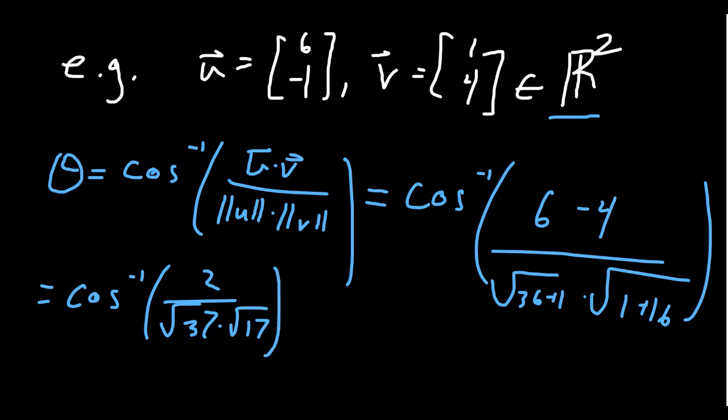And so simplifying this a little bit, you get arc cosine of 2 over the square root of 37 times the square root of 17, which those aren't perfect squares, so we can't simplify them anymore. We probably want to use a calculator to help us simplify this expression right here.